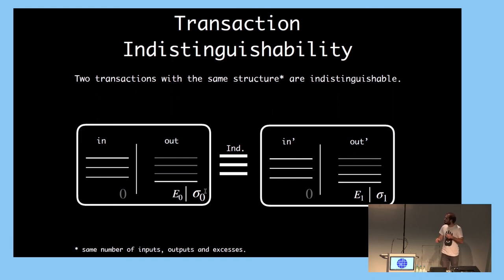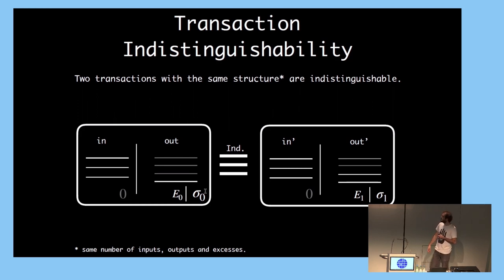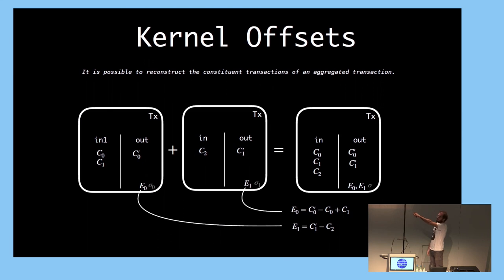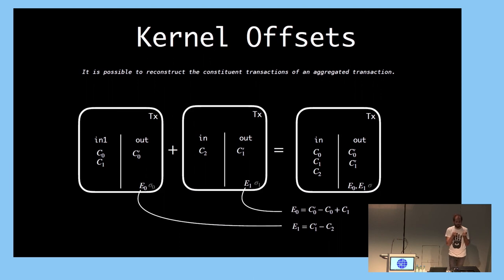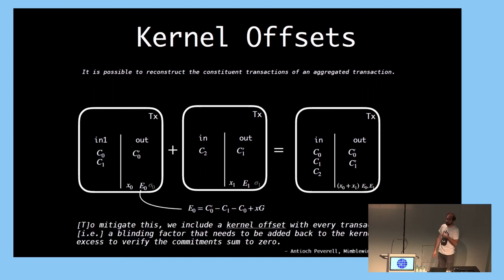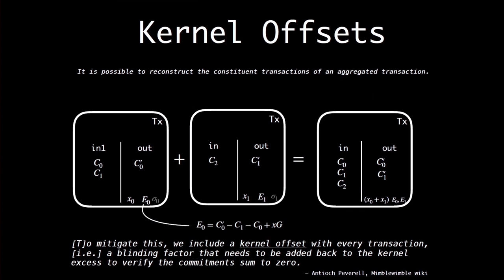This is a weak notion of privacy and we are working on a stronger notion for the full version. In fact, if you consider two transactions with nothing in common and aggregate them, the two excesses — the public keys — uniquely identify the two constituent transactions because they are subset sums of the commitments, so you can derive back which transaction contributed. There was a proposal called kernel offset from Andrew Poelstra, now integrated into Grin, that prevents this, and we will include it in the full version to strengthen the transaction indistinguishability game.